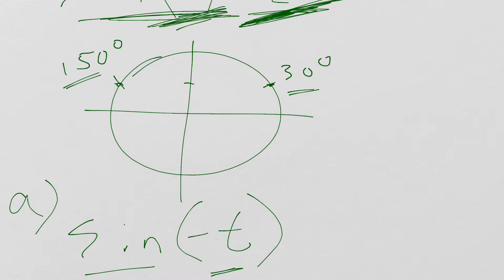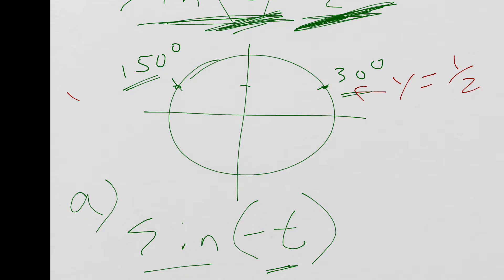So well, if this has a Y value here, I'll put it in a different color. If this has a Y value here of 1 half, and this has a Y value here of 1 half.